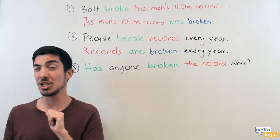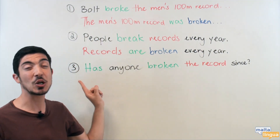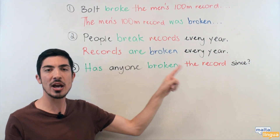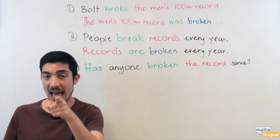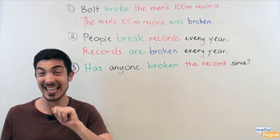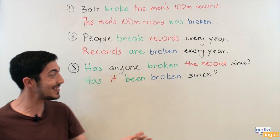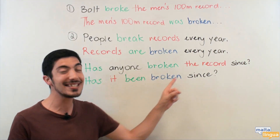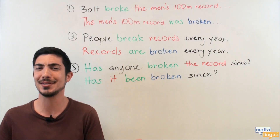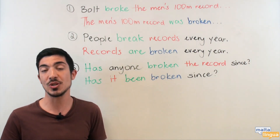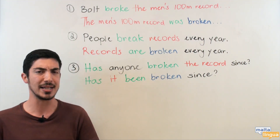A bit more challenging now — it's a question, not a statement. The active form is: 'Has anyone broken the record since?' Can you remember the passive form Katie used in the video? It was: 'Has it been broken since?' In sentence form: 'It has been broken since 2009' or 'It hasn't been broken since 2009.' That was the present perfect passive.